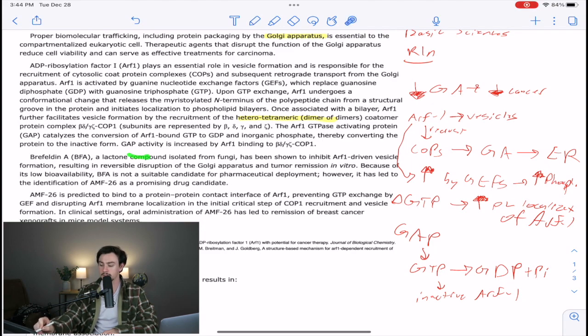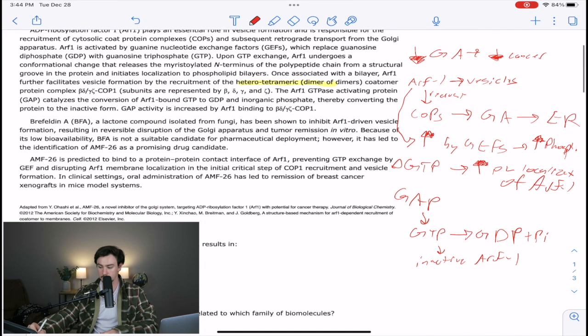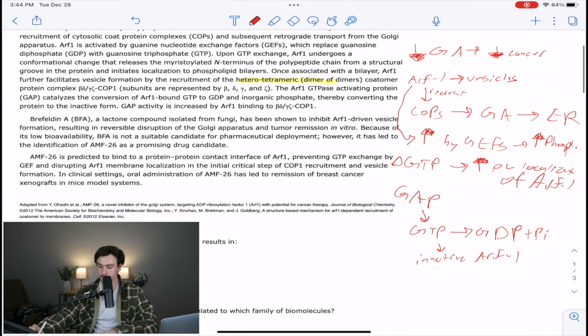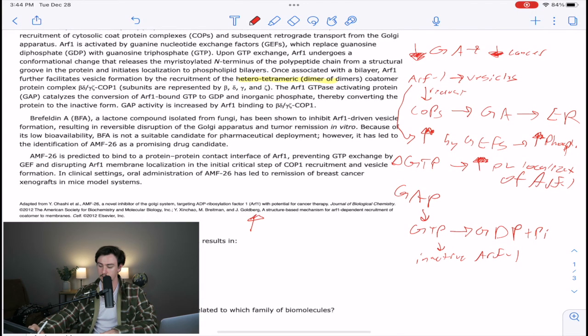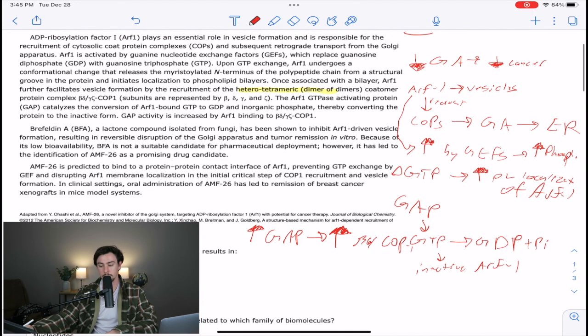GAP activity is increased by ARF1 binding to this complex. This is always important. Whenever they tell me that something is increased or upregulated, that's a super important relationship. And so I'm going to go ahead and write down increased GAP activity is increased by or related to an increase in the beta-delta-COP1.